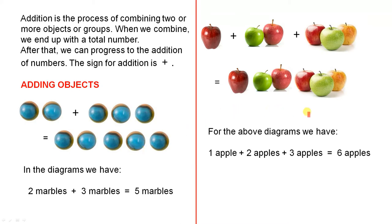For the above diagrams, we have one apple plus two apples plus three apples. Now, if we count those, one, two, three, four, five, six. And that gives us six apples altogether.